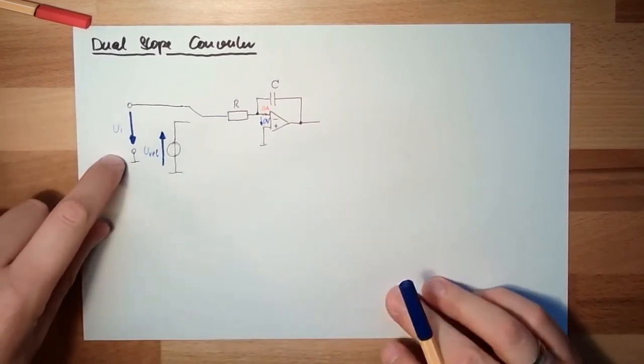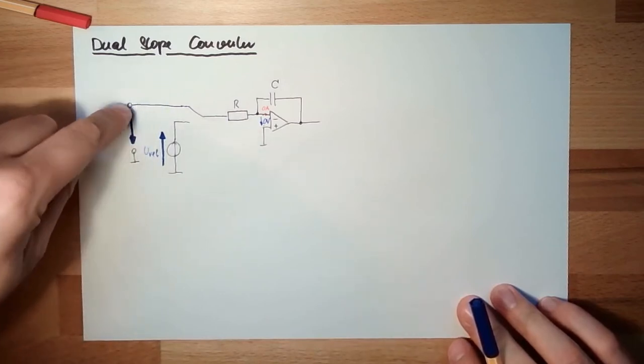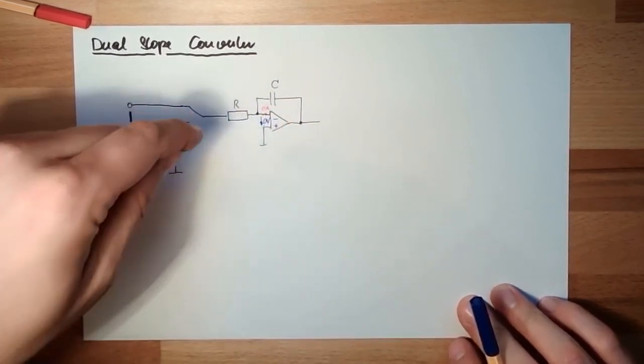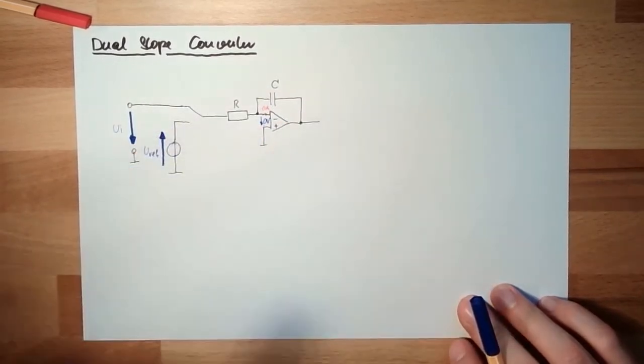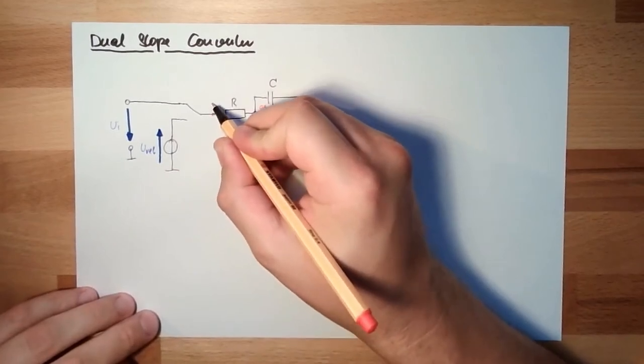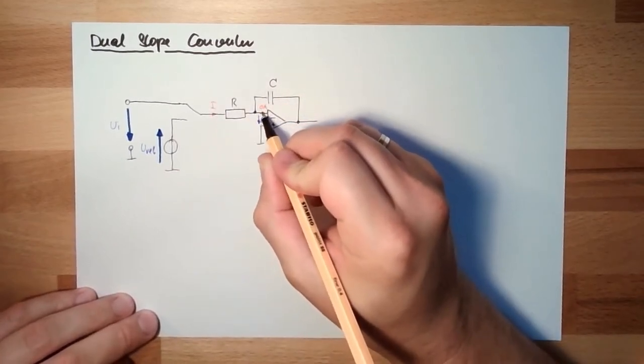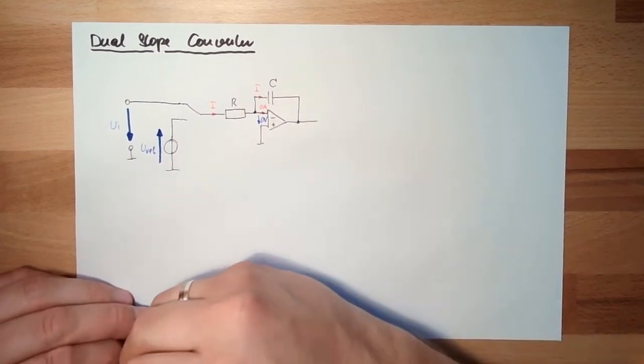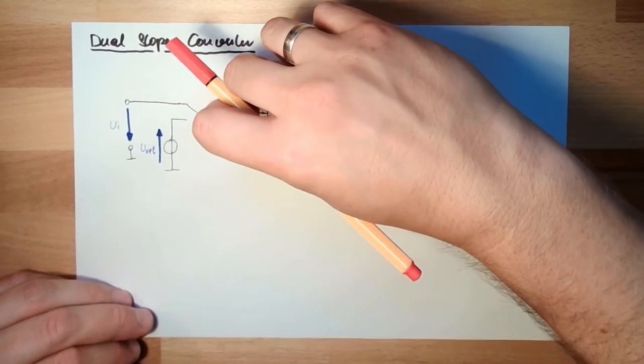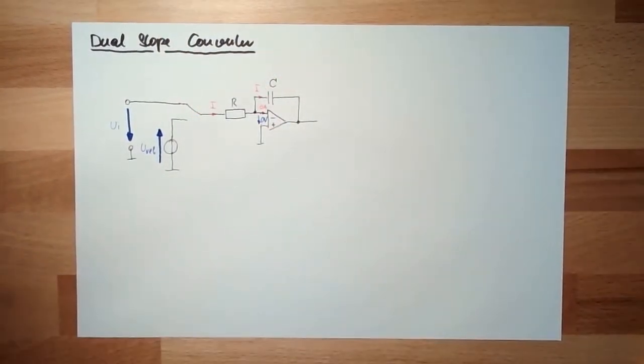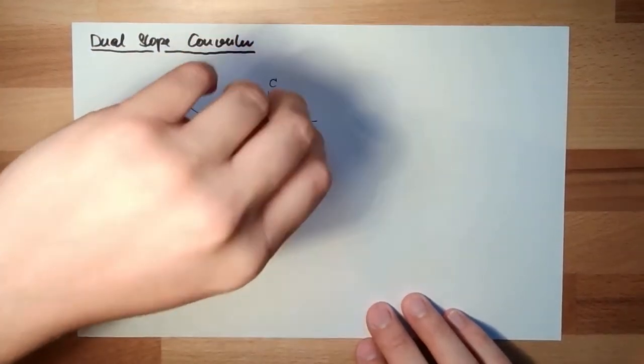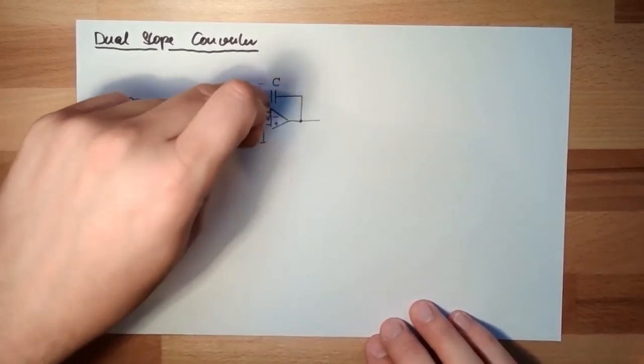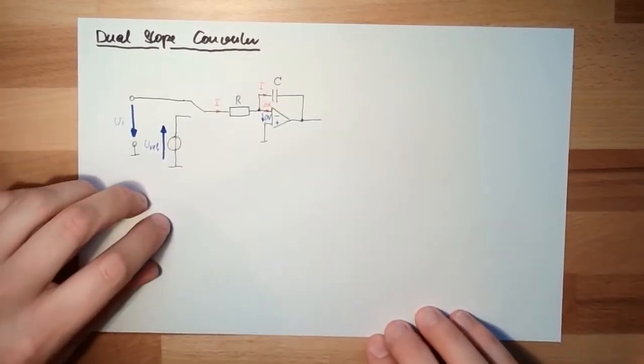This means, if I do have now this UI here, I have this UI here on this R. This means, if I have a voltage and I have a resistance, then there will run a current I. And this current will not go in here, because there is zero ampere. It will go up here. And whenever a current is running through a capacity, through a condensator, then this condensator is loaded. Depending on the capacity, it is loaded faster or smaller. The current, I nail down the current with this R, and the capacitor will get charged. Simply get charged.